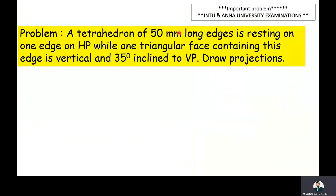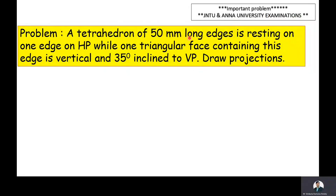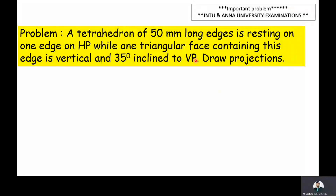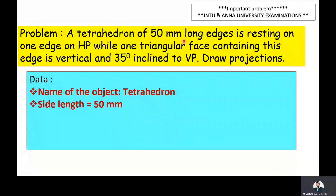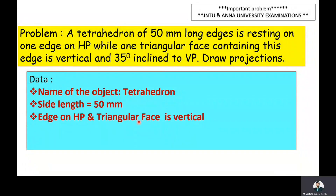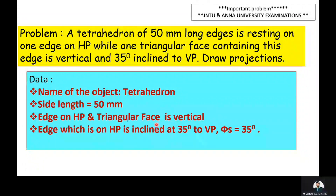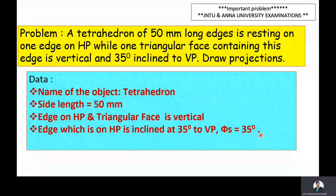This is a very important problem, asked many times in JNTU and Anna University examinations. The given problem is: a tetrahedron of 50mm long edges is resting on one edge on the HP, while one triangular face containing this edge is vertical and inclined at 35 degrees to the VP. The side inclination with VP equals 35 degrees.